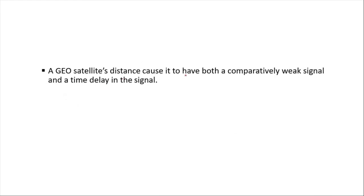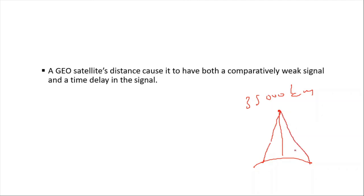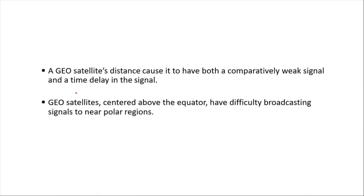However, the geostationary satellite's distance of about 35,000 kilometers causes comparatively weak signals and time delay. As the signal travels up and back through the atmosphere, it experiences attenuation and becomes weaker. Also, geostationary satellites are centered above the equator, so they have difficulty broadcasting signals to near-polar regions.